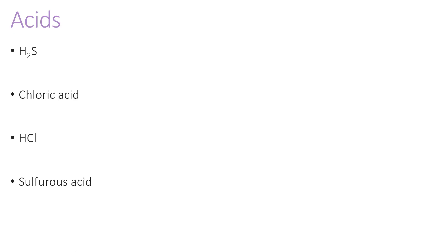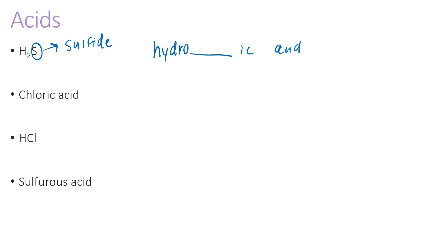For the first acid example, H₂S: the S is sulfur, and in a compound it is called sulfide. Since it ends with '-ide,' we name it as 'hydro___ic acid,' giving us hydrosulfic acid. The sulfur acids are a bit unusual — you may also see it written as hydrosulfuric acid, which is a little more correct and more typical.